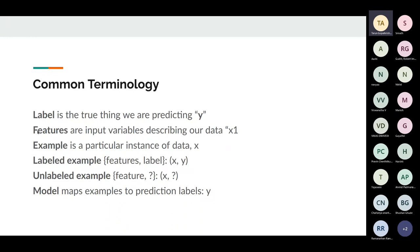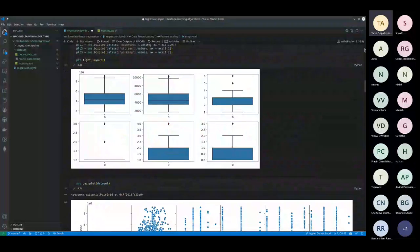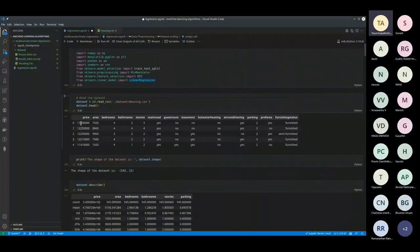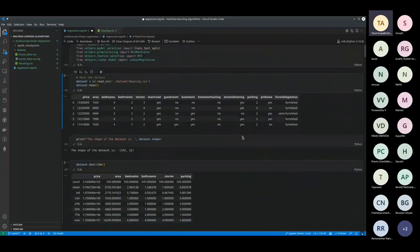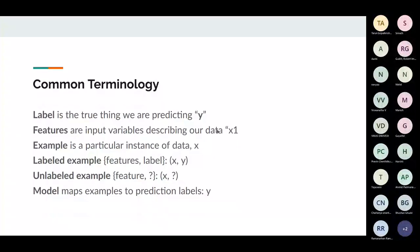In the cat and dog example, the label is the cat or the dog. Features are things like the image itself. An example is a single data point. You have labeled and unlabeled examples — labeled examples come with known labels, as in supervised learning. In unsupervised, you just have data without labels.